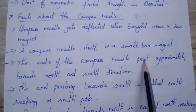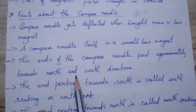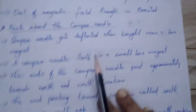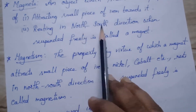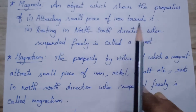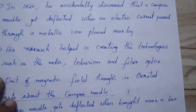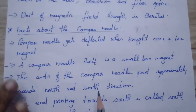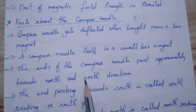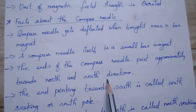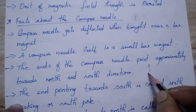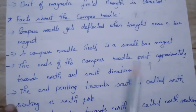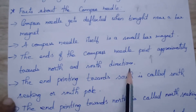The ends of the compass needle point approximately towards the north and south direction. Just as we studied, when a magnet is suspended freely it rests in the north-south direction. Likewise, considering the needle also as a small bar magnet, when it is suspended freely or kept at rest, it will always point towards the north and south direction.